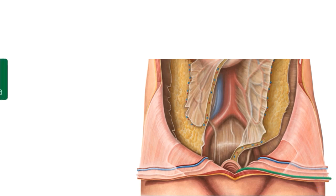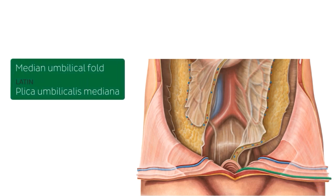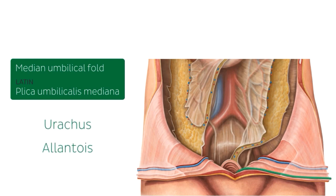Here in green we see the median umbilical fold, which is a ridge of the lower parietal peritoneum. If this part of the peritoneum were to be reflected back into its original anatomical position, the median fold would run from the umbilicus to the bladder. This fold contains the urachus, a remnant of the allantois, which is a canal found in the fetus.